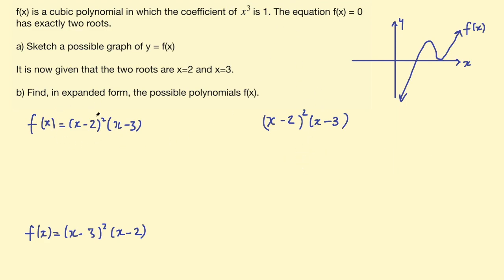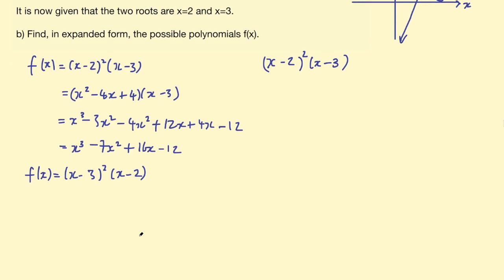So now we just need to expand these out, so this would be (x² - 4x + 4)(x - 3). And then expanding further, this would be x³ - 3x² - 4x² + 12x + 4x - 12. And then simplifying further we've got x³ - 7x² + 16x - 12. Okay, so that is my first expanded cubic.